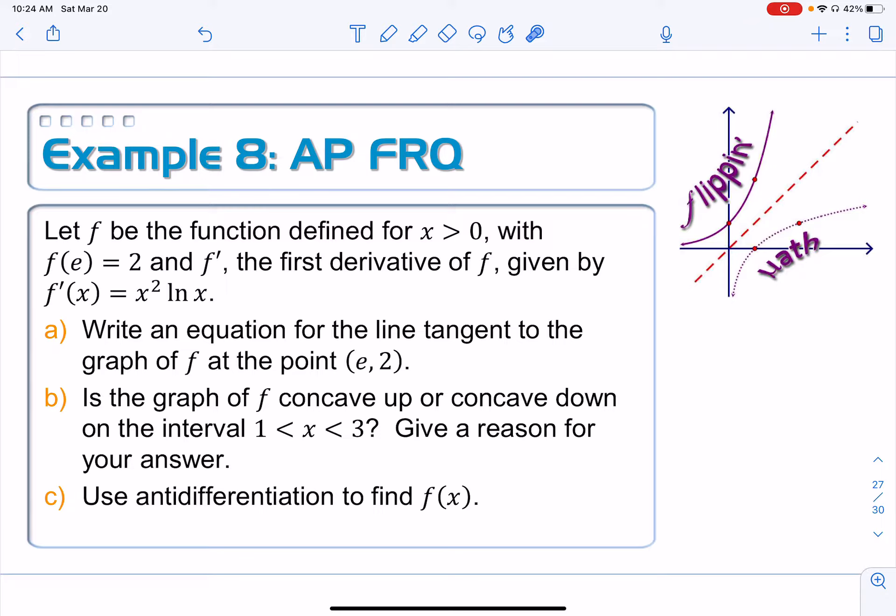Super easy. This is going to be the easiest thing that we've done all day. To find the equation of a tangent line, you need two pieces of information, one of which is already given to you. That's the point. You also need the slope, and we're going to find the slope by just taking that point and plugging it into the derivative. Part B, is the graph of f concave up or concave down on the interval from 1 to 3? Give a reason for your answer.